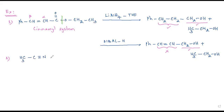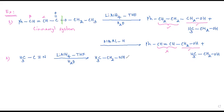Now when ethane nitrile, or methyl cyanide, is reduced using lithium aluminum hydride, we get a primary amine. Whereas with DIBAL-H, we get an aldehyde — that is the difference.